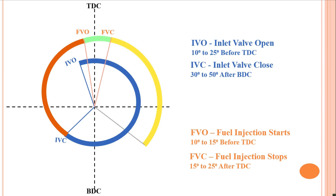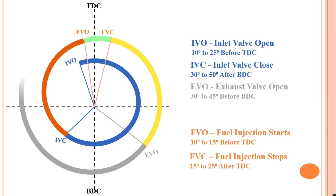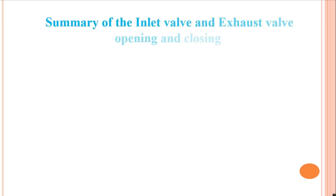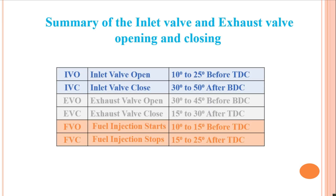For complete removal of burnt gases from the engine cylinder, which is essential to allow more fresh charge in, the exhaust valve opens earlier. The kinetic energy of the fresh air entering from the inlet valve also helps to remove burnt gases from the cylinder to the atmosphere. The exhaust valve opens 30 to 45 degrees before BDC, and this is the valve overlap for the diesel engine.